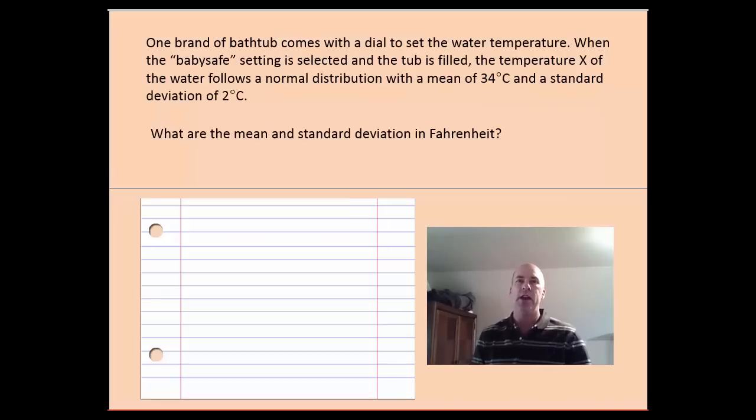So our first problem today deals with a type of bathtub made for infants. It comes with the dials to set the water temperature. And when the baby safe setting is selected and the tub is filled, the temperature of the water follows a normal distribution. But we're given the information in Celsius. The mean is 34 degrees Celsius. The standard deviation is 2 degrees Celsius. We'd like to know the mean and the standard deviation in Fahrenheit.